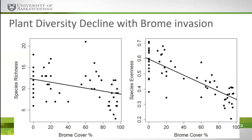We started measuring the plant community using traditional methods and we see the expected results of a brome invasion. With brome percent cover on the x-axis and total species richness on the y-axis, as brome cover increases we see fewer and fewer species. Species evenness also goes way down — the native species that are present are usually just one or two individuals among the big mass of brome. Exactly what you'd see in most places, and this is why brome is such a conservation problem.